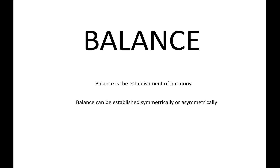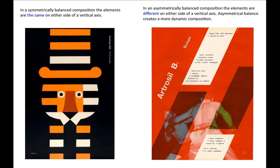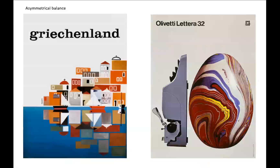Balance is the establishment of harmony. Balance can be established symmetrically or asymmetrically. In a symmetrically balanced composition, the elements are the same on either side of a vertical axis. In an asymmetrically balanced composition, the elements are different on either side of a vertical axis. Asymmetrical balance creates a more dynamic composition.